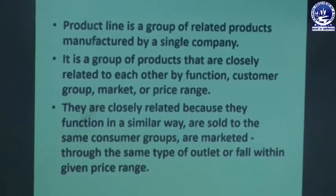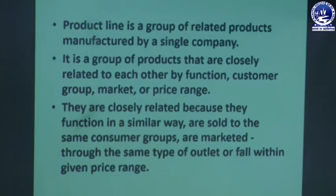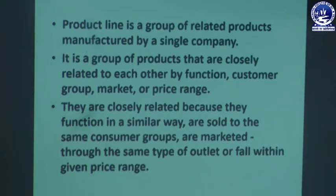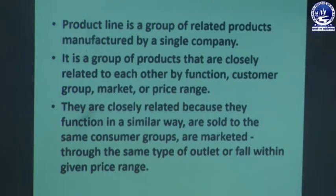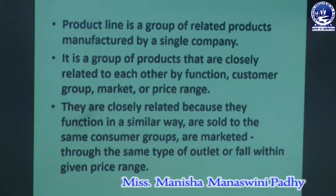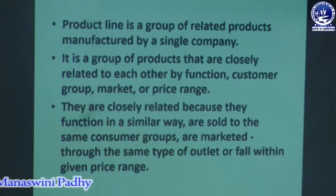Product line is a group of related products manufactured by a single company. Those products which are related to each other and manufactured by a single company form a product line. For example, Holix is a company that offers different varieties of products like sugar free Holix, Holix for junior kids, Holix for pregnant women, Holix for ladies, etc. This is what we call a product line.